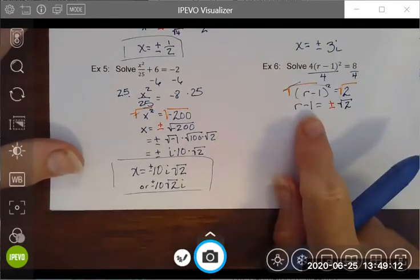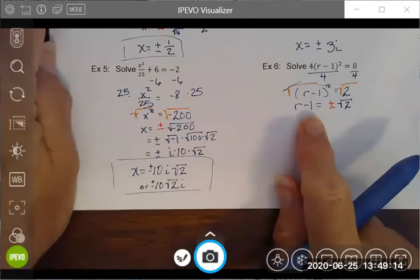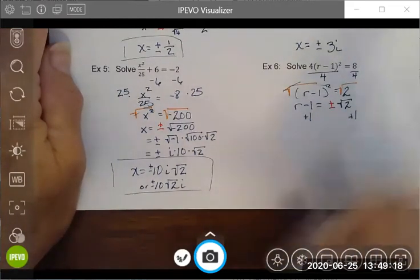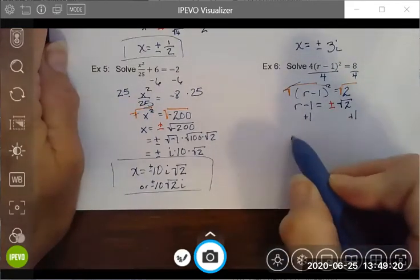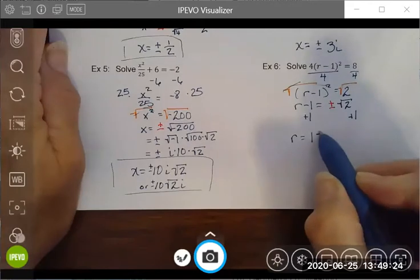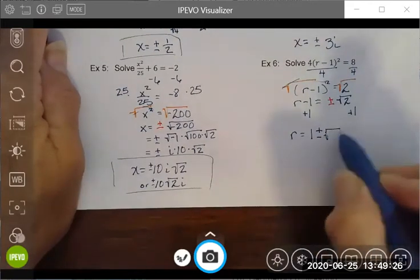From here, my variable isn't quite isolated, so I'm going to add one to both sides of my equation. I'm left with r equals one plus or minus square root two.